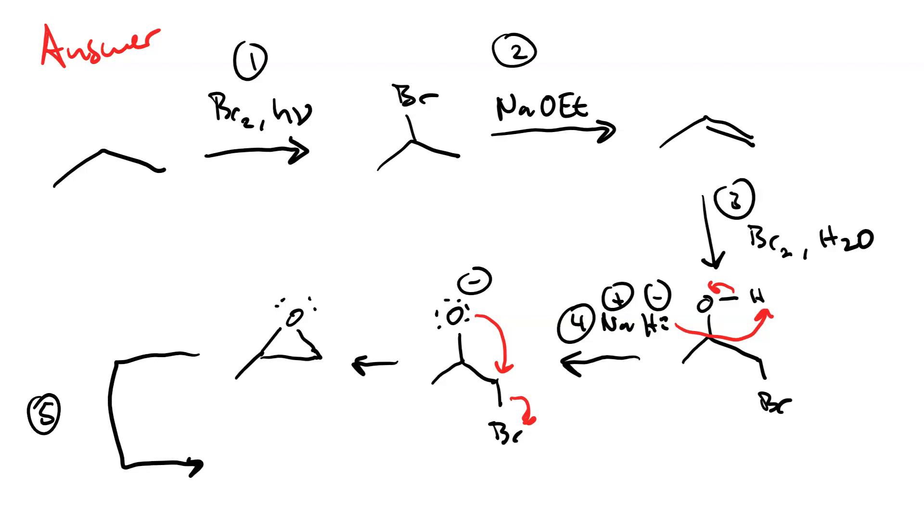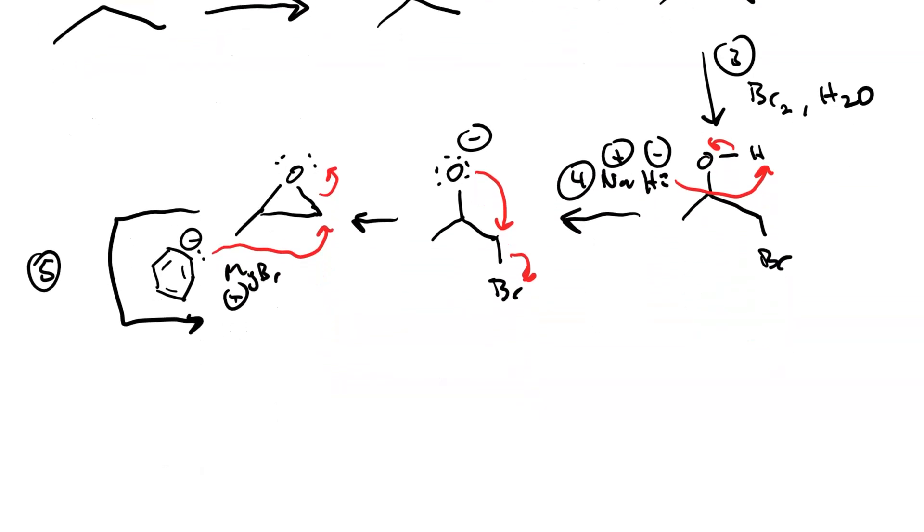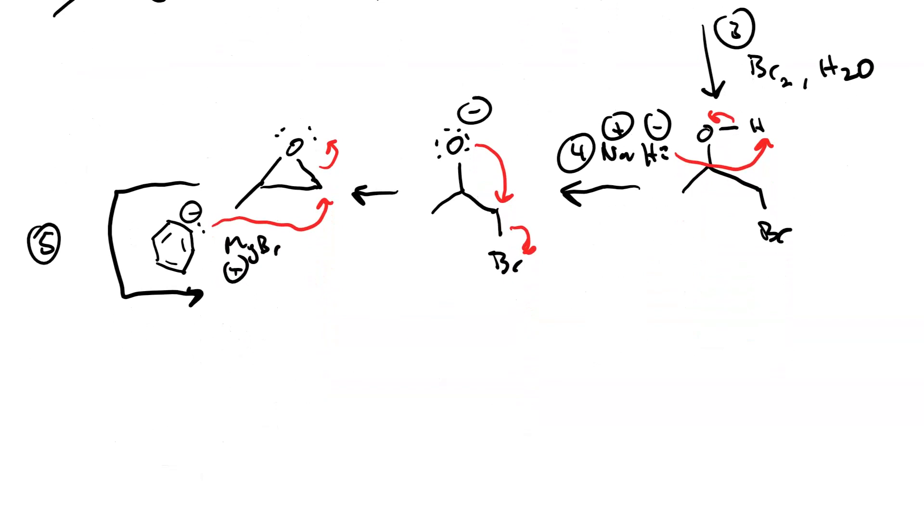Step five, phenylmagnesium bromide. This would just be listed as PhMgBr. We're going to do nucleophilic attack on the less-substituted carbon. This bond was made from this lone pair.